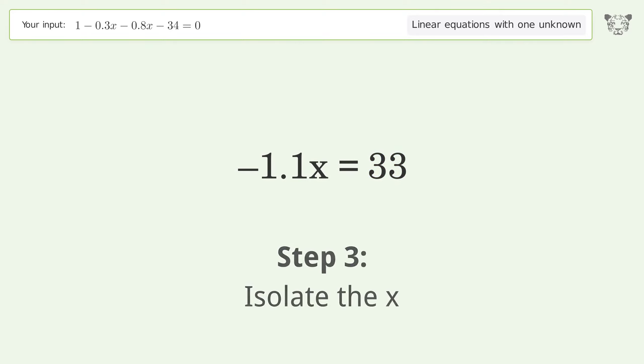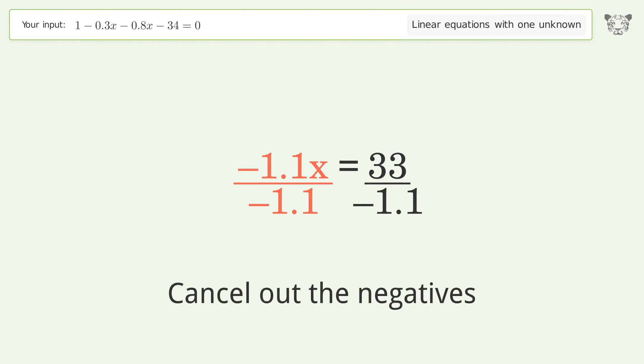Isolate the x. Divide both sides by negative 1.1. Cancel out the negatives. Simplify the arithmetic.